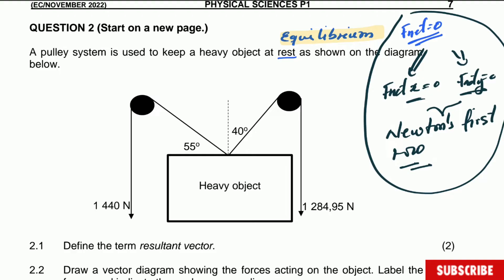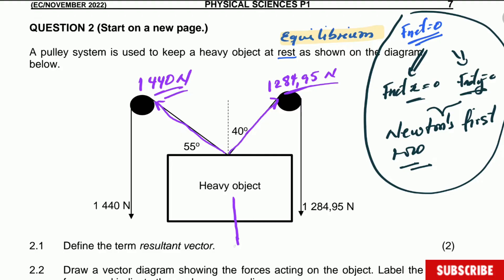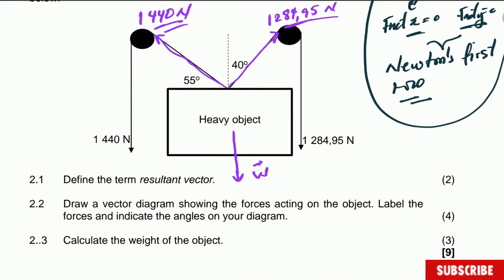There is the drawing and there is a heavy object on which you have two tensions, two forces acting. One on the right is 1,284.95 N — that force is the same as this force here because it's the same tension. This other force with the other rope is equal to 1,440 N. Also acting on this object is weight. This is not the free body diagram though.